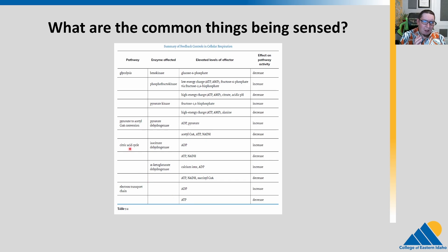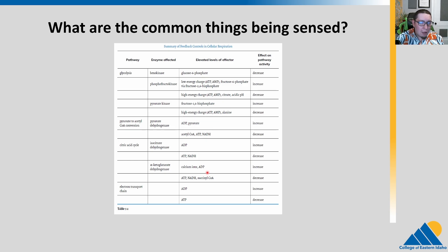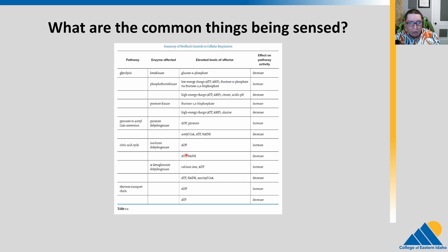We're sensing these signals and there are receptors that sense this, and the enzymes themselves can often detect it as well — we'll talk about how that works in a later chapter, and you can learn all about it in a biochemistry course. So things that get sensed are going to influence the rate of pathway activity. ADP generally means there's not enough ATP, so we crank up the rate. If you have high ATP or NADH, that means you've produced a lot and we don't need any more, so we decrease the level of activity.